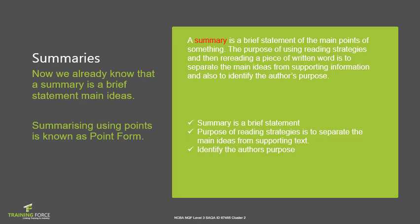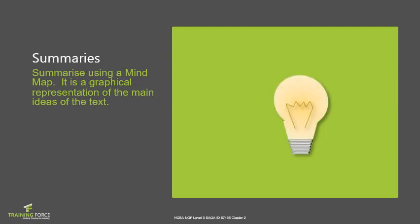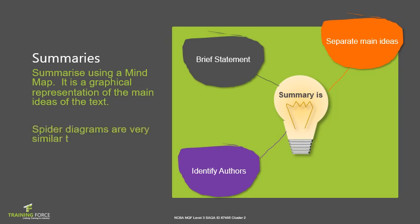Mind maps are another way of summarizing information — a graphical representation of the main ideas of a text. For example, taking those three points, we have a central point — 'summary is' — and branch out to: it's a brief statement, to separate the main ideas, and to identify the author's purpose, each in a different color. Spider diagrams are very similar to mind maps, only they look like a spider's web where each connecting point is in a different color.